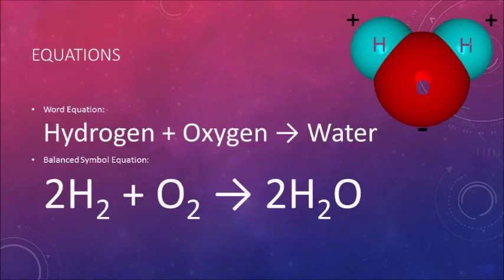The word equation for this reaction is hydrogen reacts with oxygen to yield water. The balanced symbol equation informs us that two moles of diatomic hydrogen will react with one mole of diatomic oxygen to yield two moles of water.